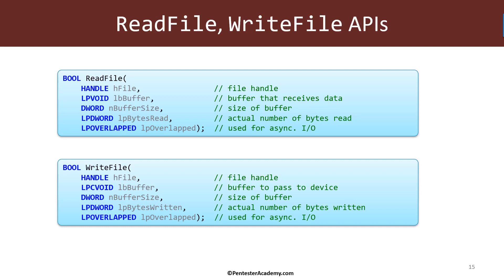The same idea applies for writing — I get back information for how many bytes were actually used in the writing process. The last parameter is a pointer to a structure called Overlapped. Normally this is null, which means I'm doing a synchronous operation — I call ReadFile or WriteFile and my thread is blocked until the operation completes no matter how long it takes. If I want to make things asynchronous — make a call, go do other work with my thread, and later be notified that the operation completed — that requires providing an Overlapped structure.